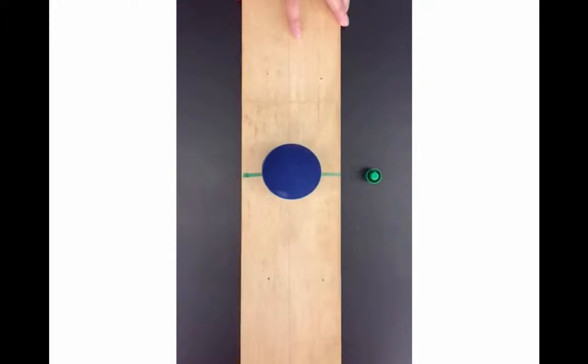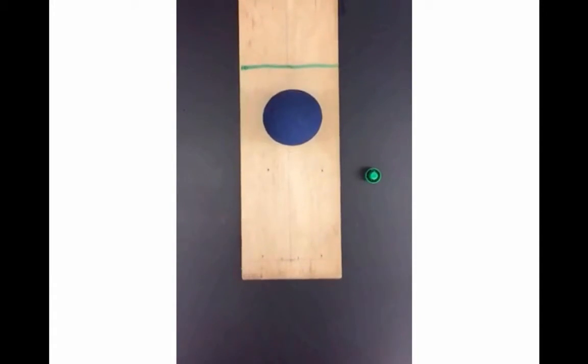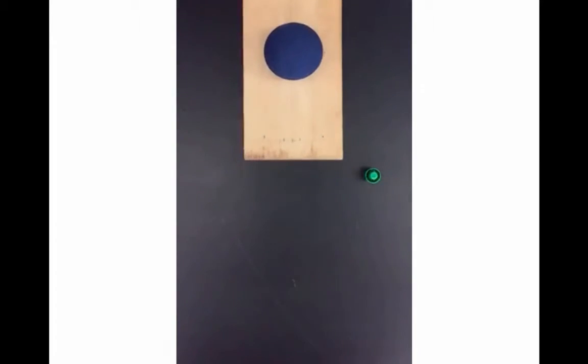Here's the motion from above. Use the green line to keep track of the motion of the ball relative to the board, and use the green marker cap to keep track of the motion of the ball relative to the table. Notice that both the board and the ball move forward relative to the table, but the board moves faster, so actually the ball moves backward relative to the board.